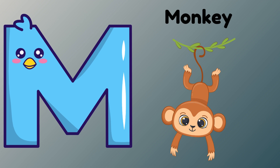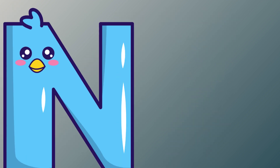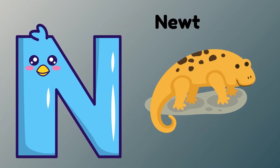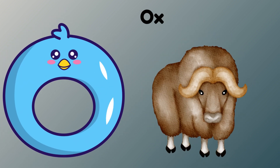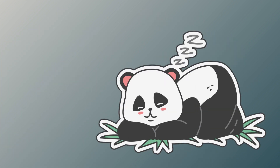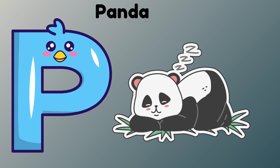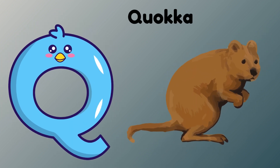M is for Monkey. M. Monkey. N is for Newt. N. Newt. O is for Ox. O. Ox. P is for Panda. P. Panda.